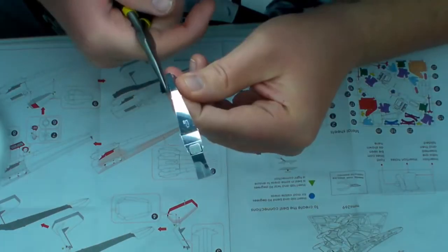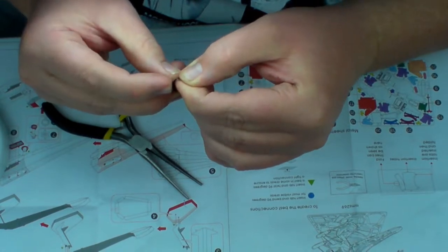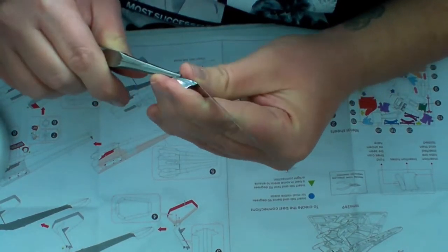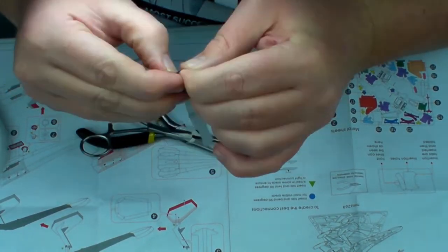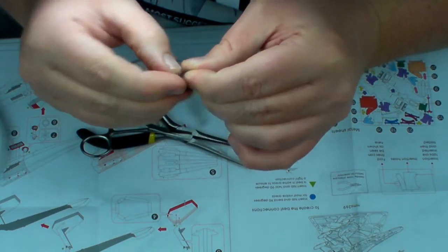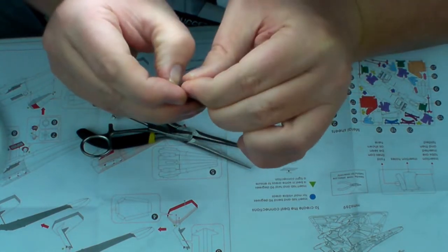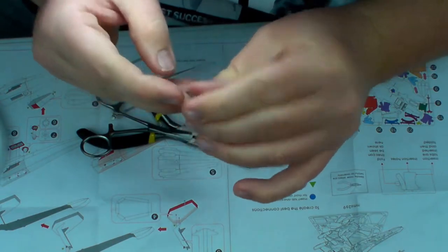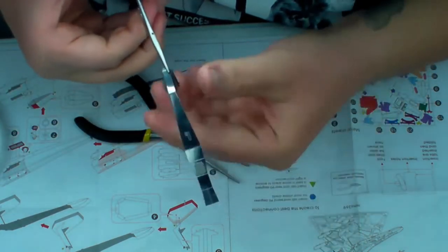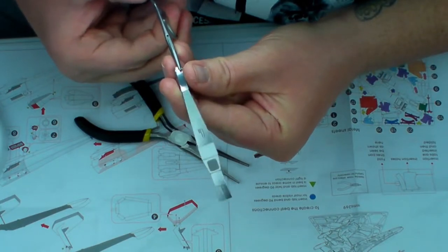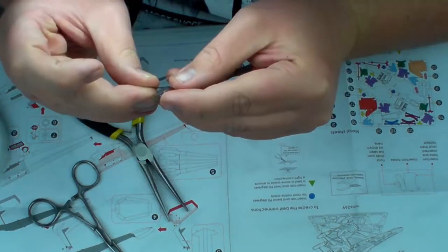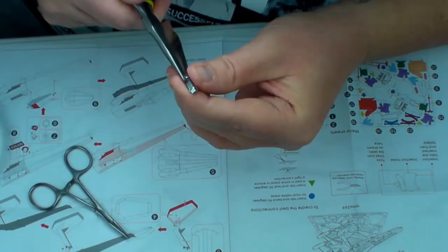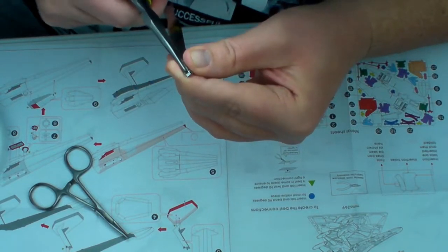We start with the front tip of the X-Wing. It was a bit tricky to get the first two tabs in place. I often bend tabs over with my fingernails. Once the parts are in place and the tabs bent over, I pinch them down with pliers to secure the tabs.